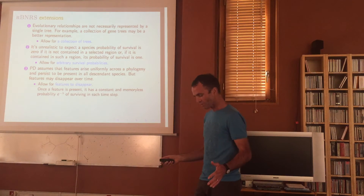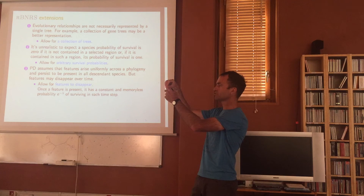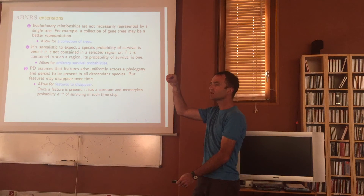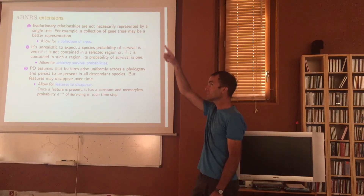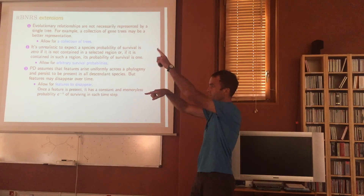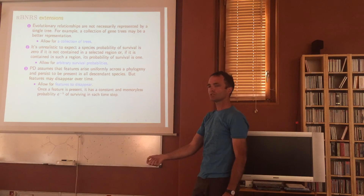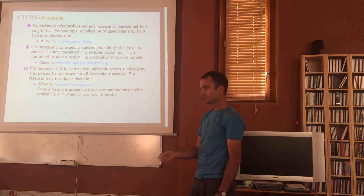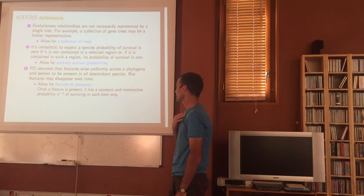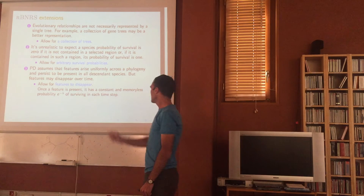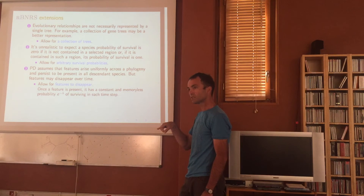The third extension concerns what happens with PD in the rooted case. A feature arises at some point and survives all the way down to the leaves. But there's no reason a feature must survive — if some ancestral species has a tail, as you go down some branch of the tree, you could lose the tail and for some later reason pick it up again. There's no reason that can't happen. So some features could disappear. We allow that: once a feature is present, it has a memoryless probability of e^{−λ} of surviving at each step — so features can be lost.